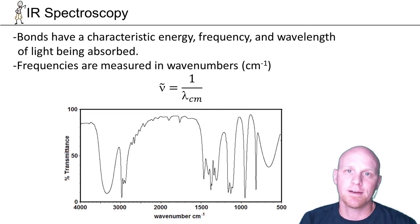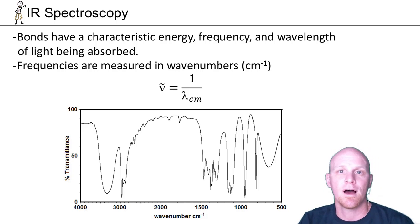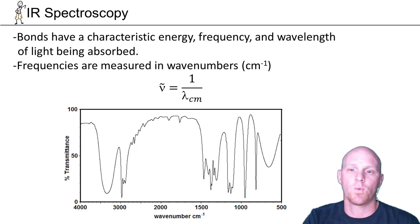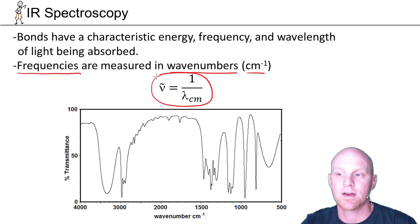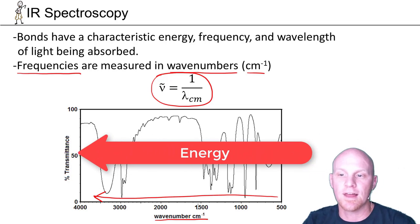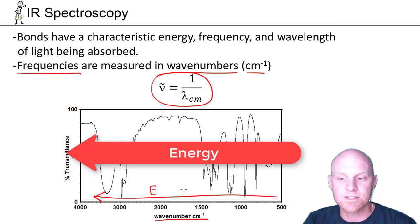Every bond has a characteristic energy, frequency, and wavelength in which it will absorb in the electromagnetic spectrum, specifically in the infrared spectrum. We're going to measure these frequencies in a new unit called wave numbers. That actually is the inverse centimeter. You can arrive at those wave numbers if you take the light being absorbed and just take 1 over its wavelength as measured in centimeters. Here's a typical spectrum. The x-axis is the wave numbers. One peculiar thing is that it's increasing going to the left. Both energy and frequency are increasing to the left. Wavelength will be increasing to the right.